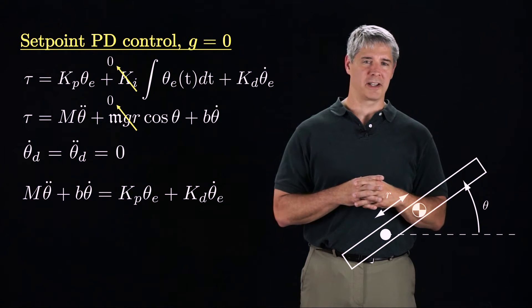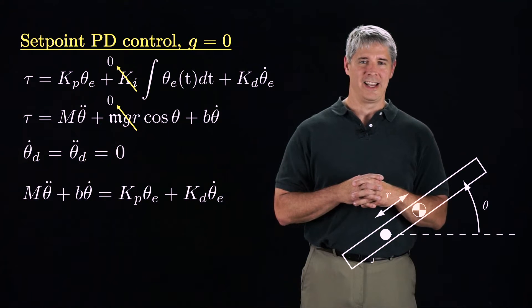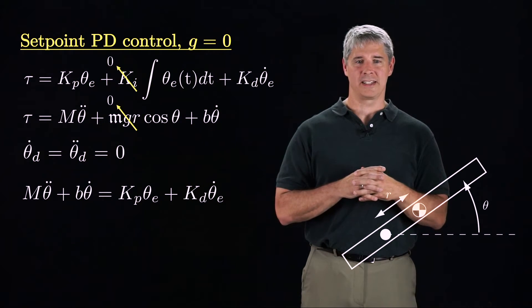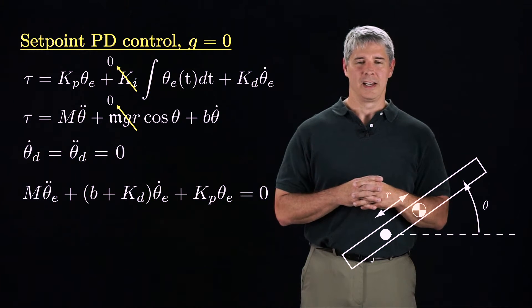If we equate the joint dynamics and the control torque, and substitute in theta e dot equals minus theta dot and theta e double dot equals minus theta double dot, we get this error dynamics. Dividing by m,